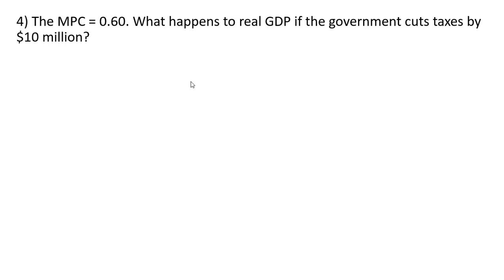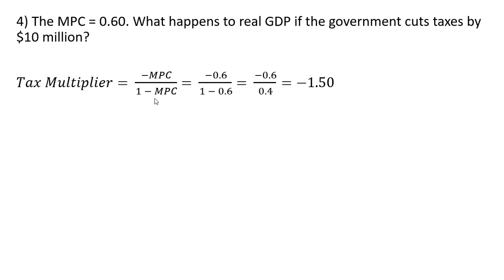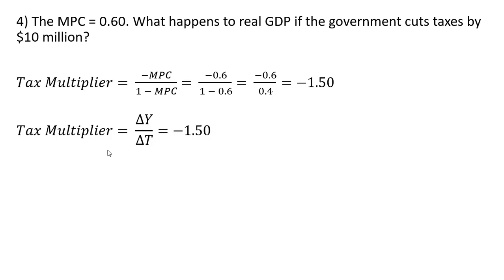Example 4. The MPC equals 0.6. What happens to real GDP if the government cuts taxes by $10 million? First we need the size of the tax multiplier. Putting 0.6 into the tax multiplier formula and simplifying, we get minus 1.5. The next step is to recognize that the tax multiplier is the change in real GDP divided by the change in taxes, and this equals minus 1.5.